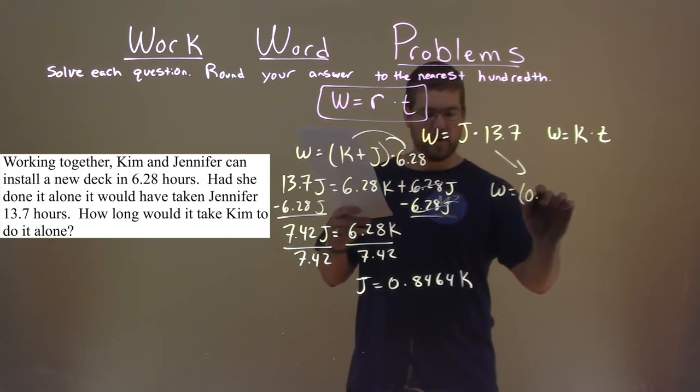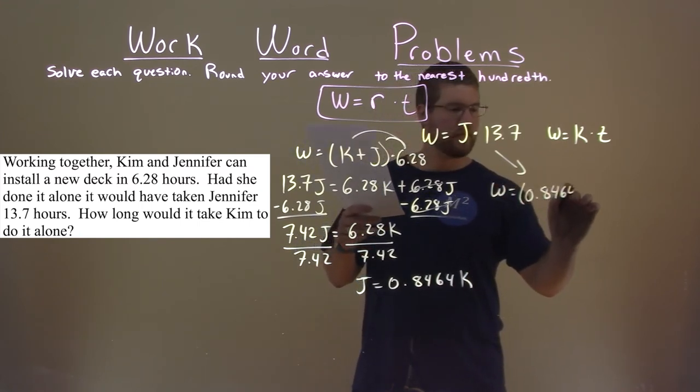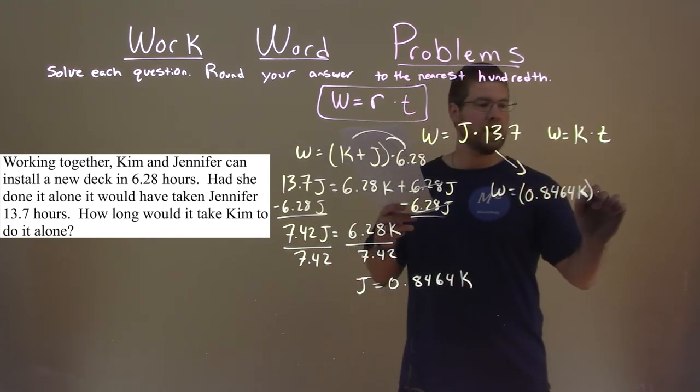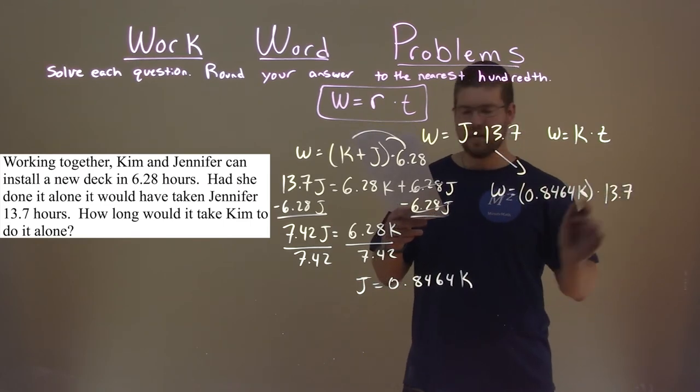Which is 0.8464 times K, Kim's work rate. That's equal to Jennifer's work rate times the 13.7 hours.